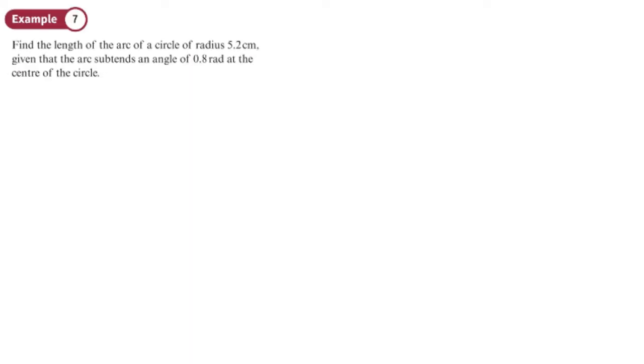So find the arc length of a circle of radius 5.2, so R is 5.2, given that the arc subtends an angle—in other words, that angle at the center is 0.8 radians.